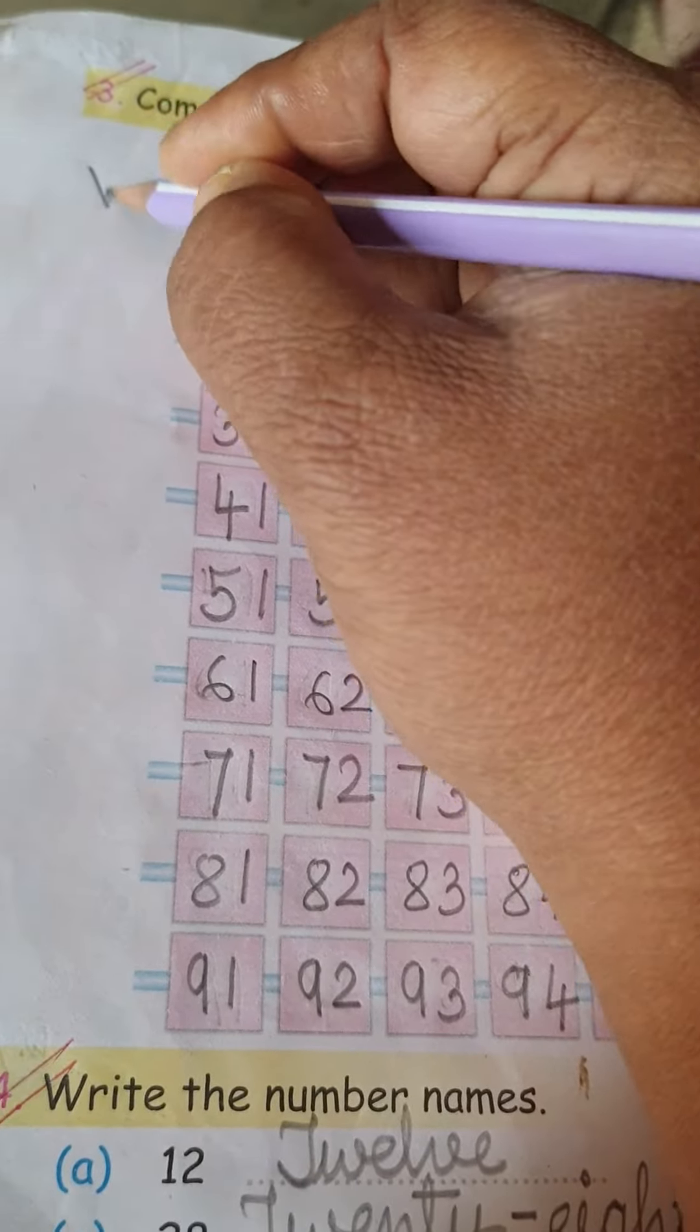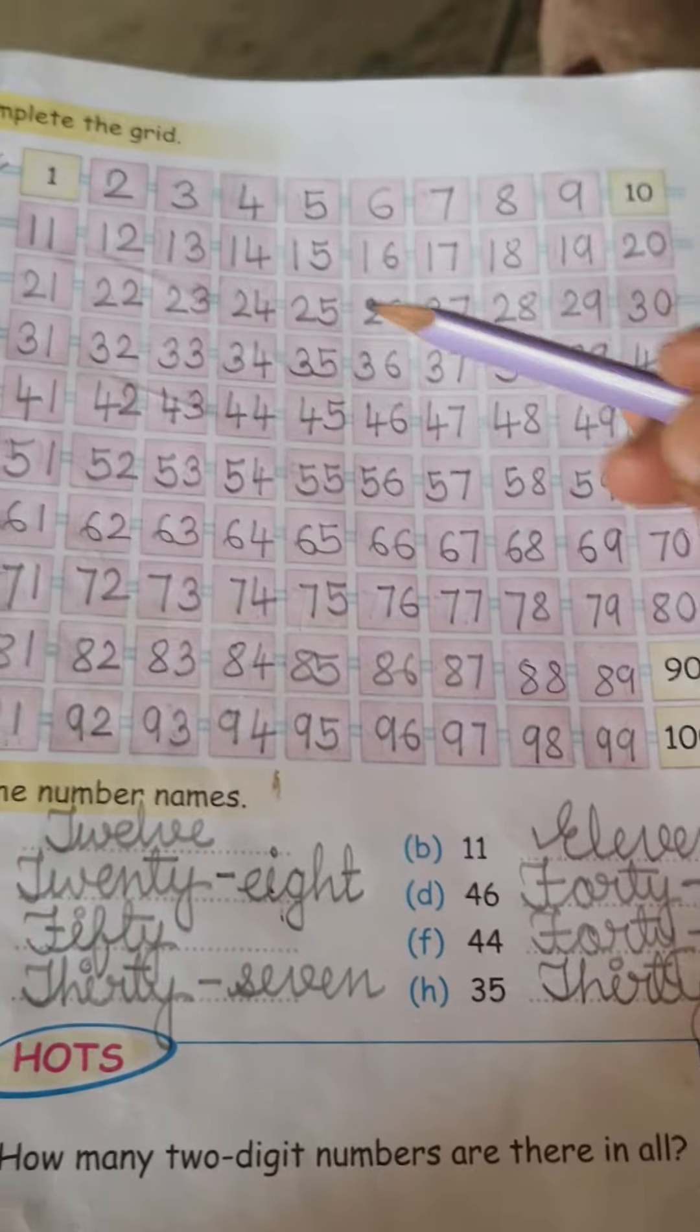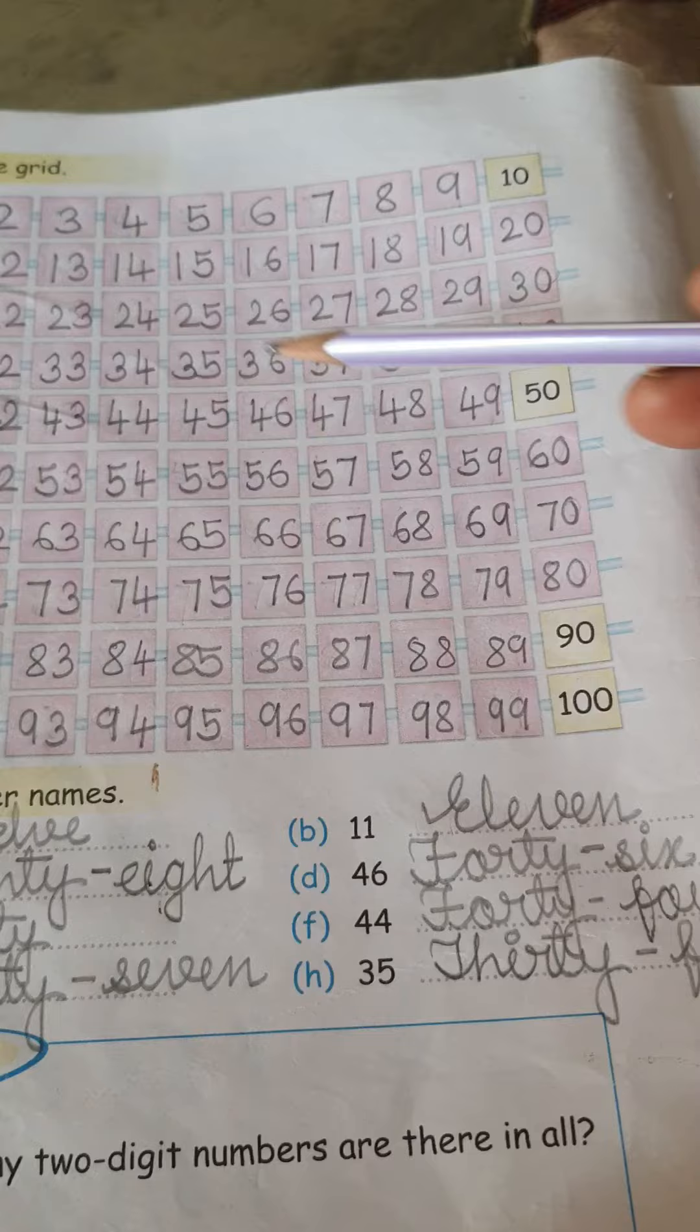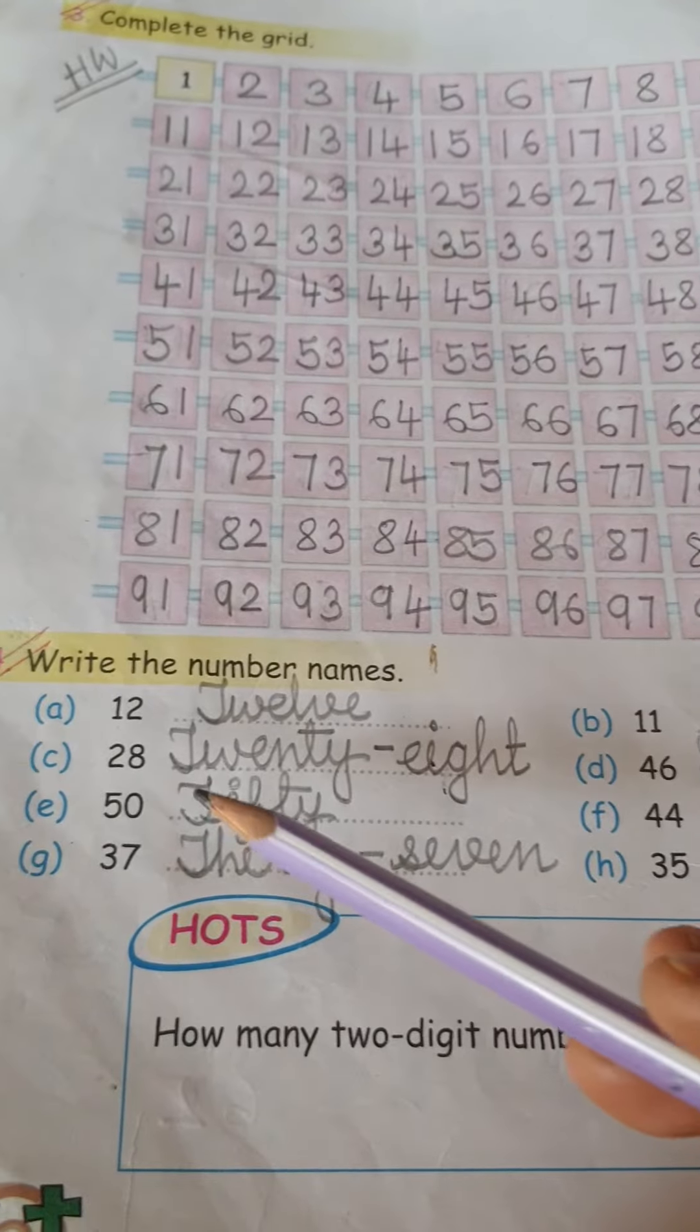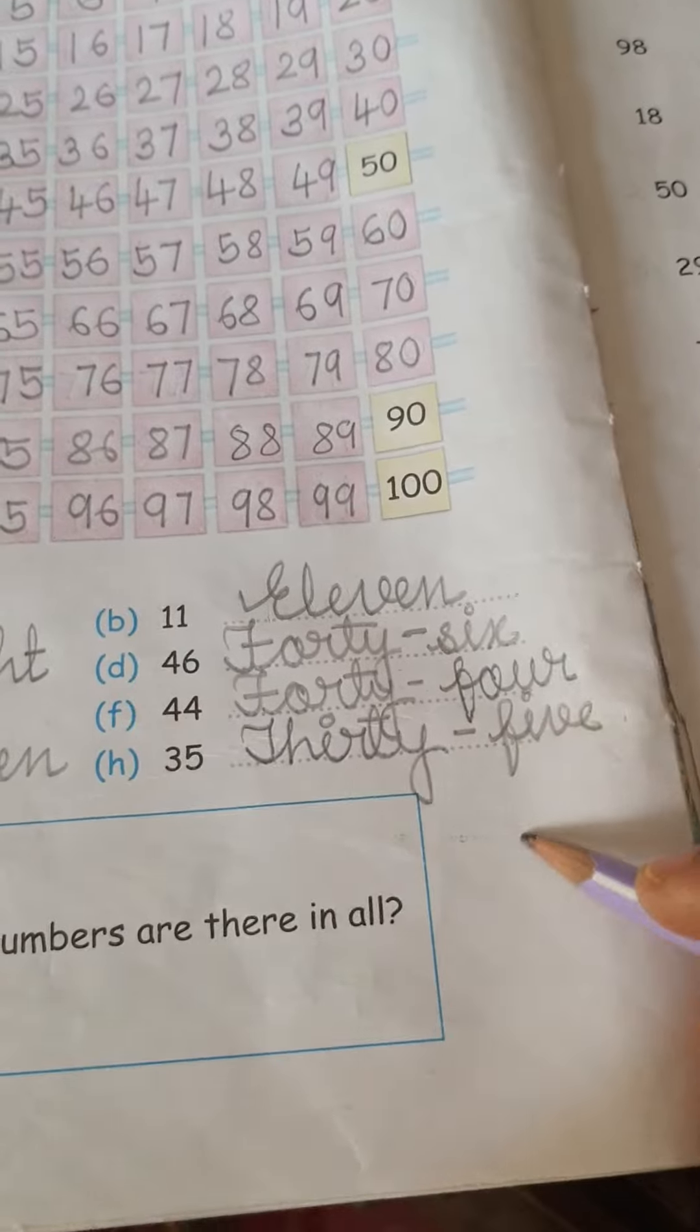This is for your homework. Very easy. Number 1 to number 100, you have to write the numbers, and these are the number names.